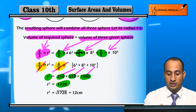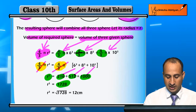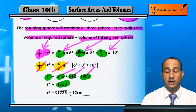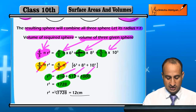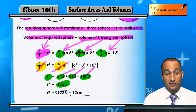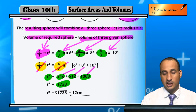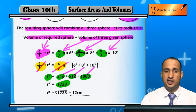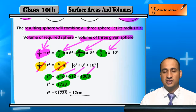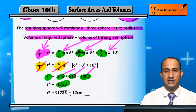The cube root of 1728 gives us 12 cm. So r equals 12 cm, which is the radius of the resulting sphere. This is the same concept applied to other questions. Now see Exercise number 3.